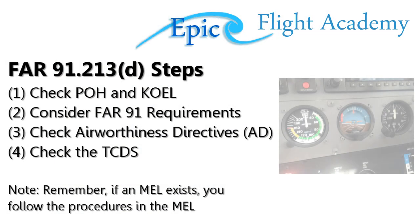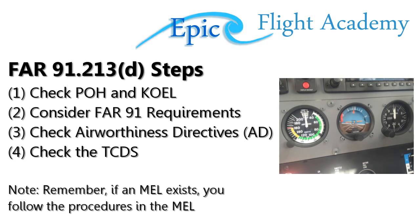In review, FAR 91.213 has four distinct steps that we must go through. If the answer is found in the first step, which is the case in this situation, we don't need to look any further because we know the answer. However, if the instrument or system in question was not found in that first step, we would have to continue through all four of these steps until we know for sure whether the instrument itself is required or not.